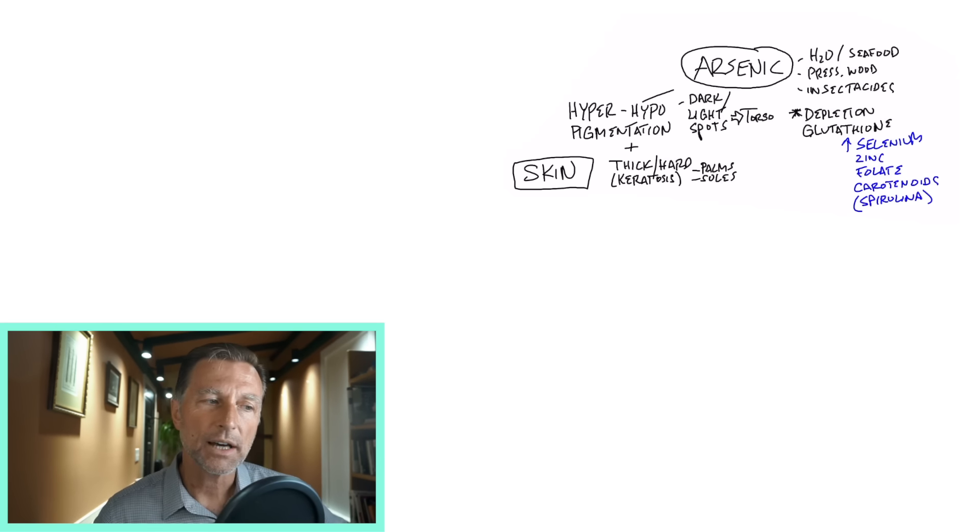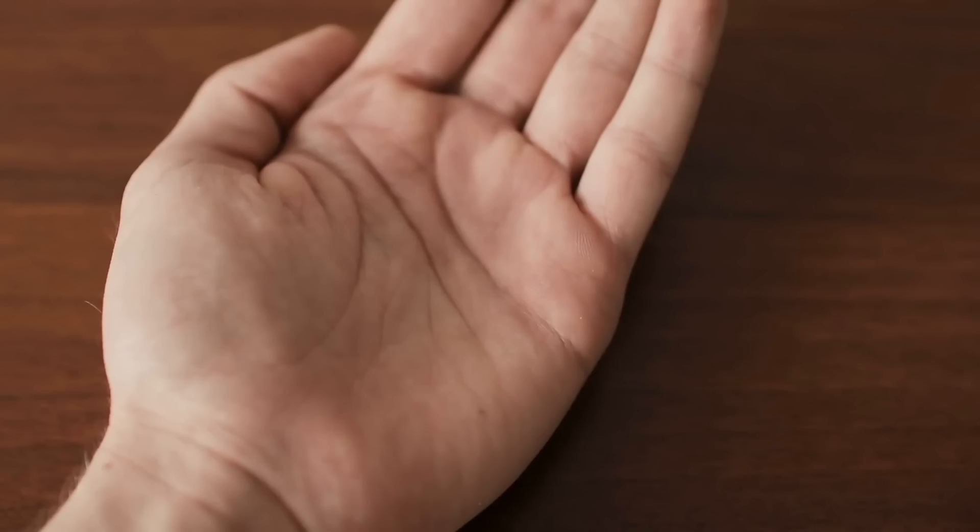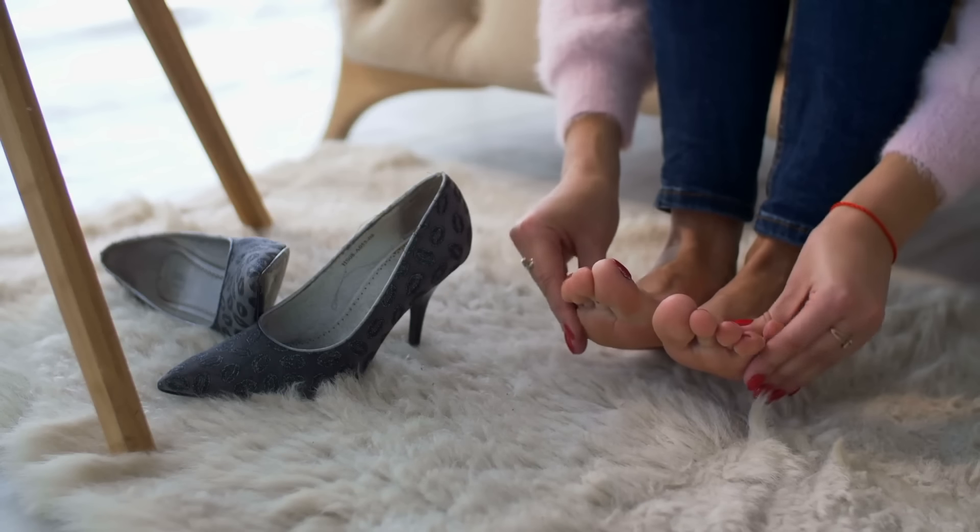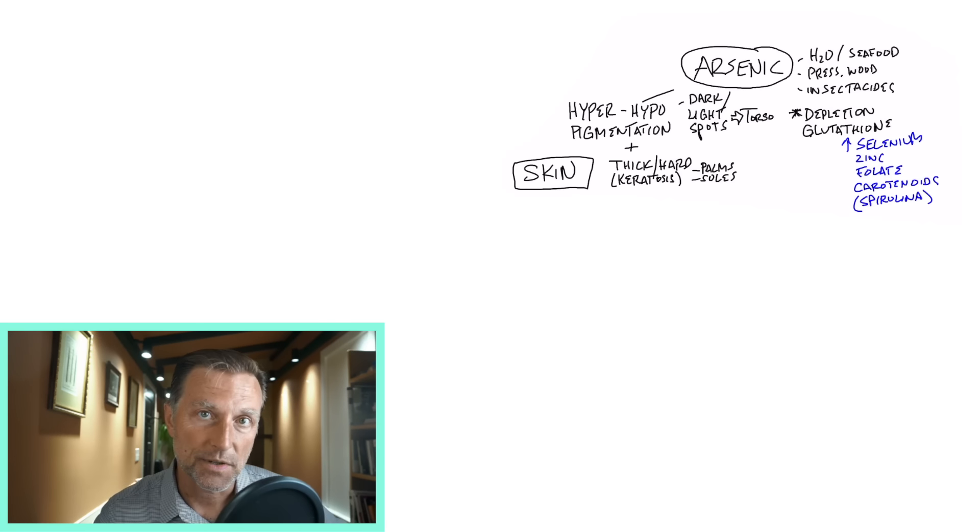You may also notice a hard surface on the palms of your hand and the soles of your feet. This is called keratosis, and this is another indication that potentially it could be arsenic.